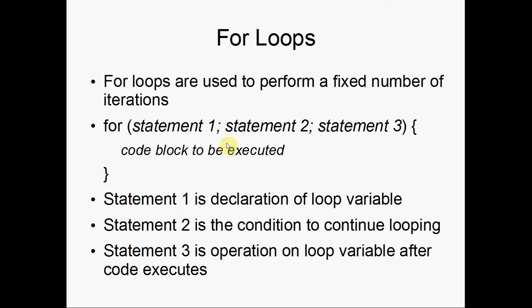For loops have three statements inside. The first one declares a loop variable, like int i equals 0. The second is a condition to continue looping, like i less than 10. And statement 3 is the operation on the loop variable after the code inside the block executes, like i++.